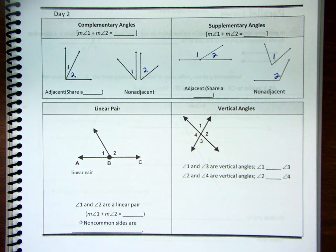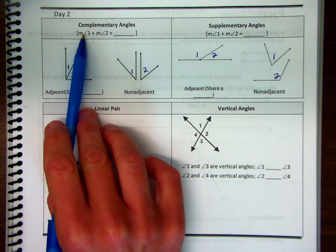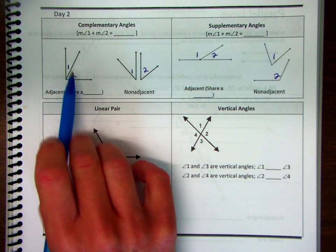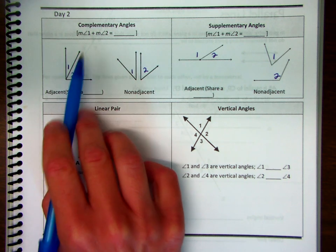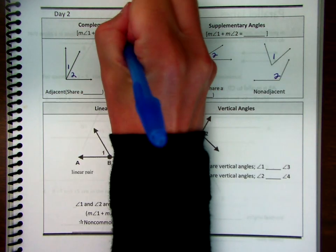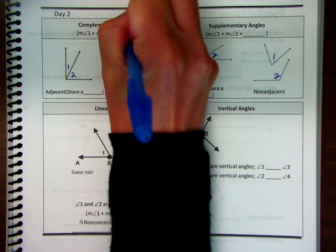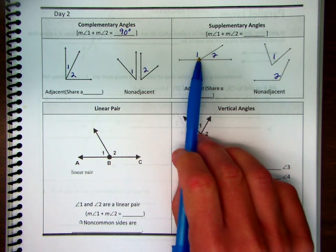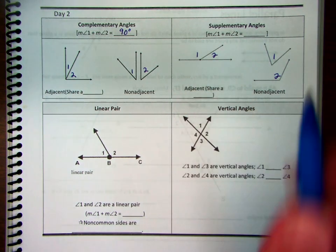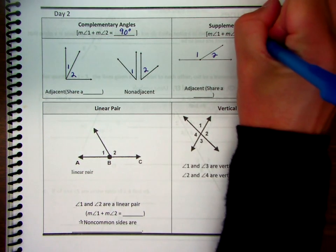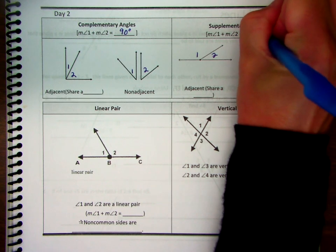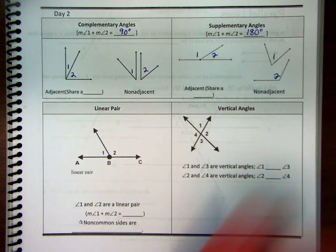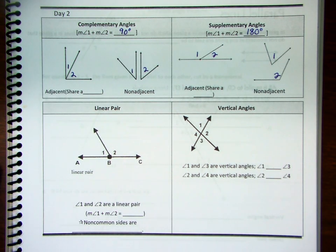Complementary angles: the measures of two complementary angles — in this case one and two — add up to 90 degrees. For supplementary angles, the two angle measures add up to 180 degrees.